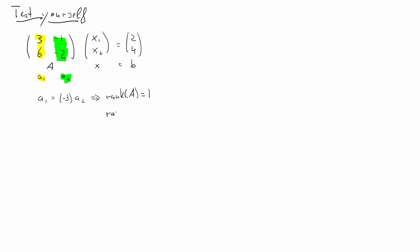What about the rank of [A|B]? When we add vector B, we can see that the second element 4 is twice the first element 2 — exactly the same ratio as in A1 and A2. In fact, B is equal to negative 2 times A2. So the addition of B didn't add any more information. The rank of [A|B] is still 1 — we only have one independent column.